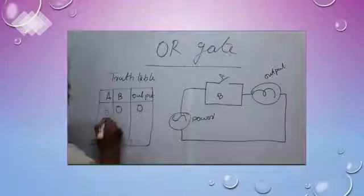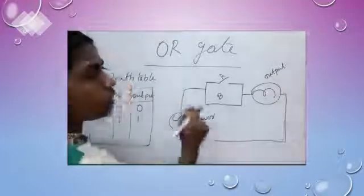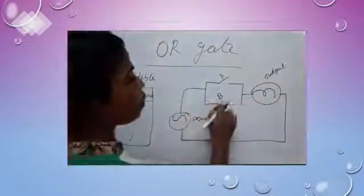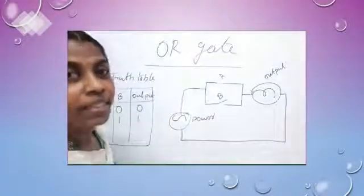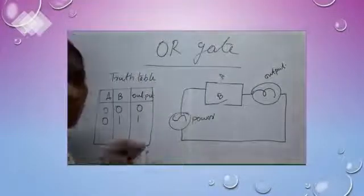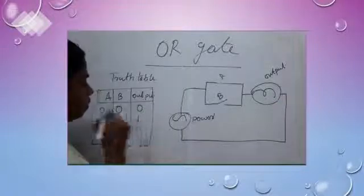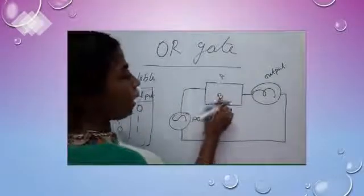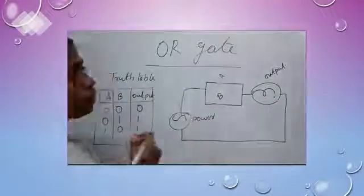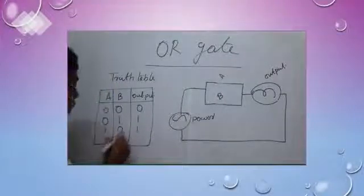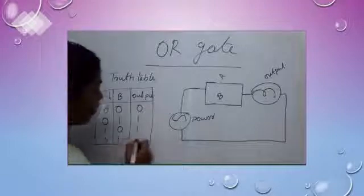If A is OFF and B is ON, what happens? The output is 1 — it is a closed circuit, that's why the output is 1. Next, suppose switch A is ON and B is OFF — is there any closed circuit? Yes! So the output is 1. That means if A is equal to 1 and B is equal to 0, output is 1. Next, suppose both A and B are ON — is there any closed circuit? Yes! There is a closed circuit, so the output is 1. If A and B are ON, the value of A and B is 1, and the output is 1.